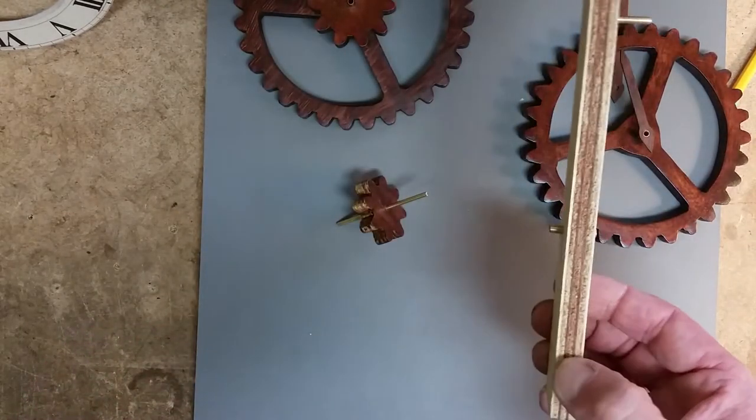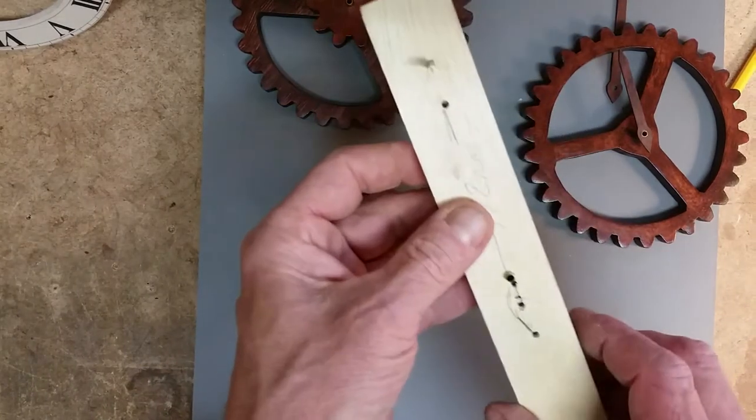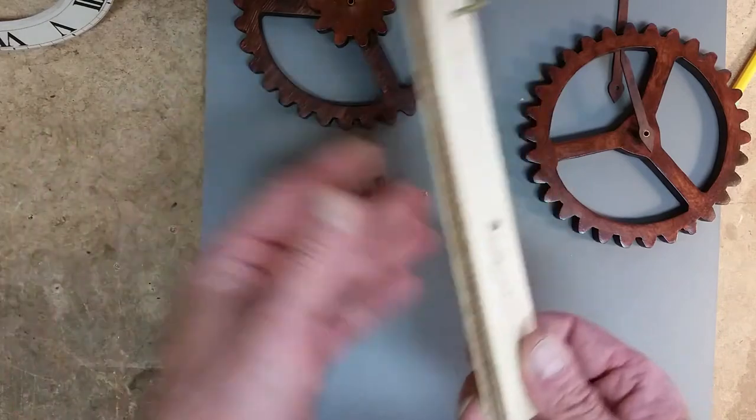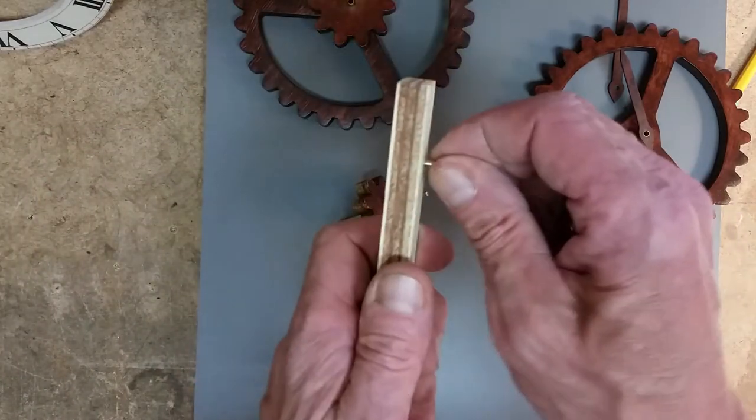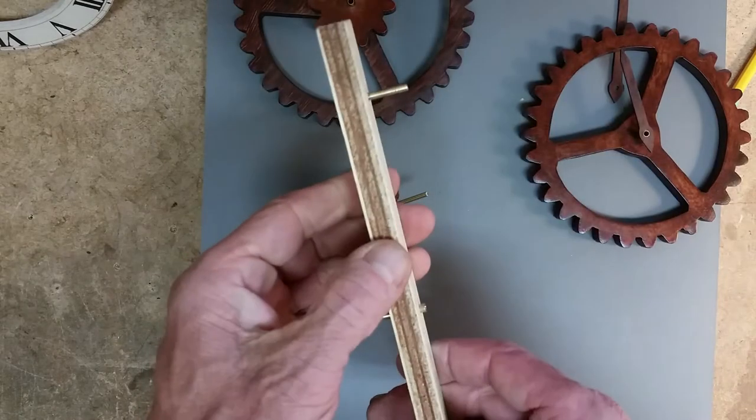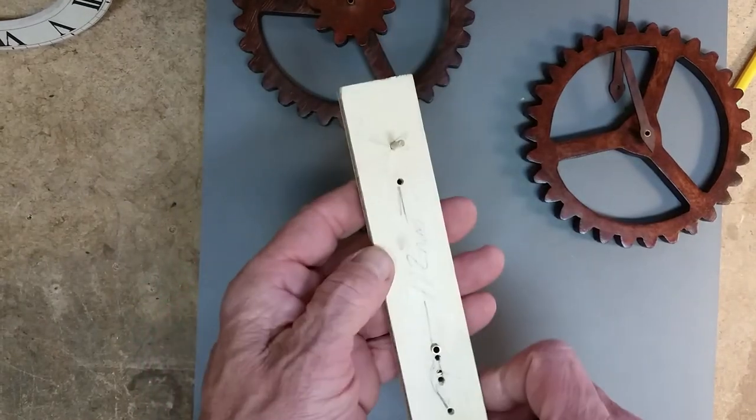This scrap piece of wood here represents the frame or the front plate of the clock. The upper pin right here is stationary. It's not being driven by anything behind here.